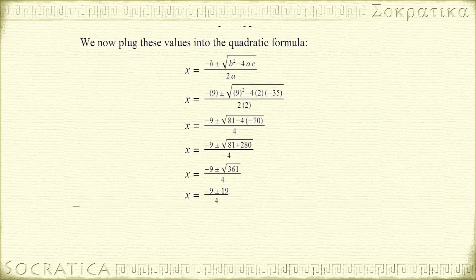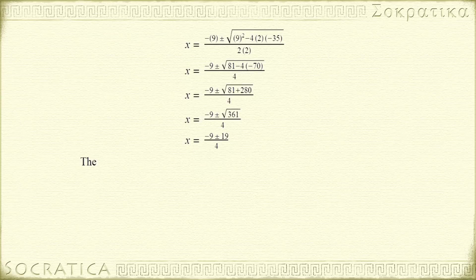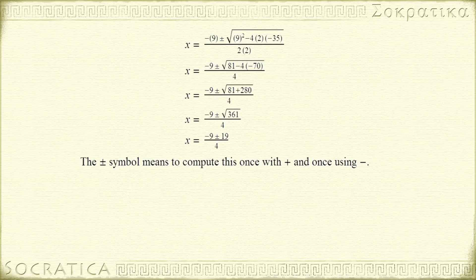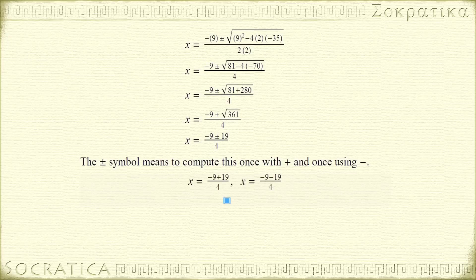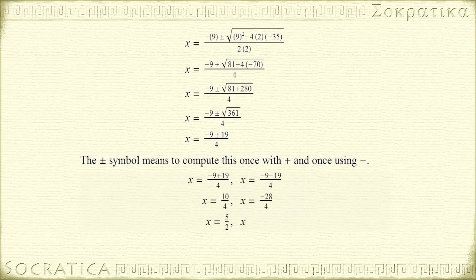The plus or minus sign means that we compute this once using the plus sign, and then we calculate it again using the minus sign. Doing this, we get x equals negative 9 plus 19 over 4, and x equals negative 9 minus 19 over 4. Simplifying, we get x equals 10 over 4 and x equals negative 28 over 4. Simplifying the fractions, x equals 5 halves and negative 28 over 4 is negative 7. So the two roots of our equation are x equals 5 halves and x equals negative 7.